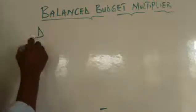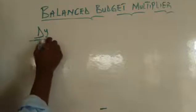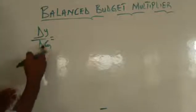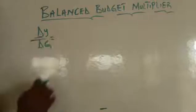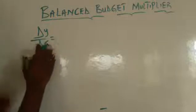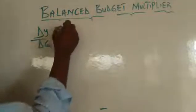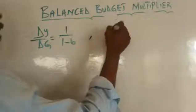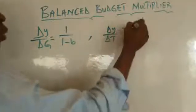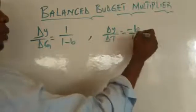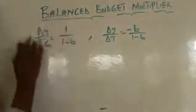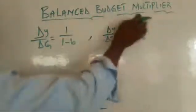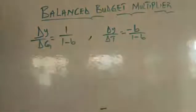They look for the multiplier — change in Y over change in G. We've done this in previous videos on how to find the government spending multiplier. The multiplier of government expenditure is 1 over (1 minus b). The multiplier of tax — change in Y with respect to change in T — is minus b over (1 minus b). When you add the multiplier of injection plus the multiplier of withdrawal, the answer is going to give us one.